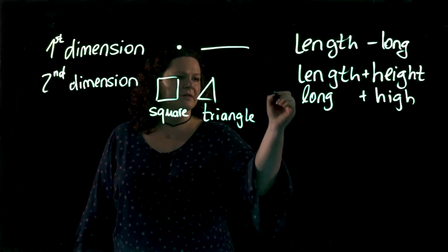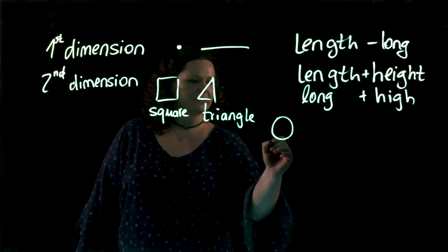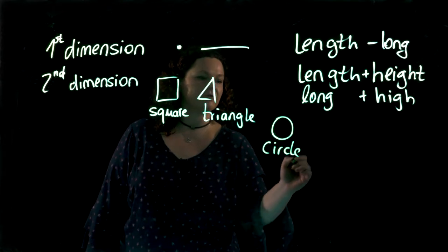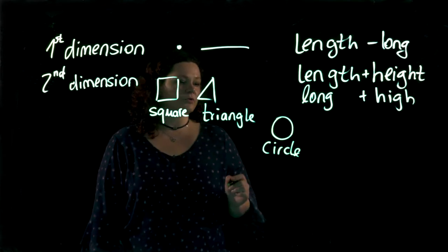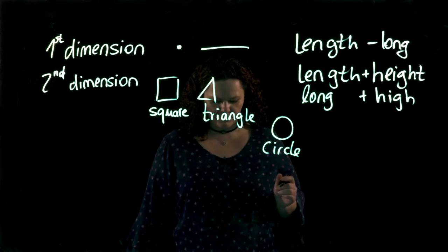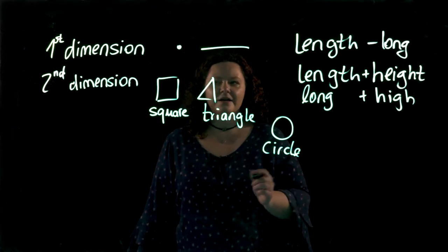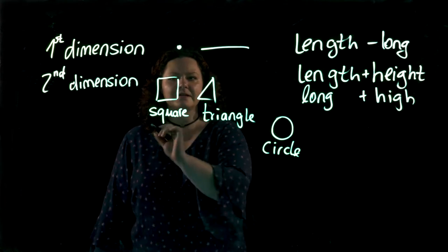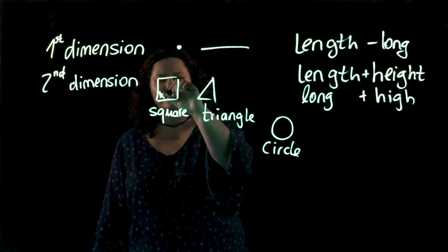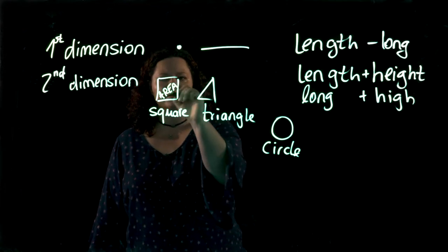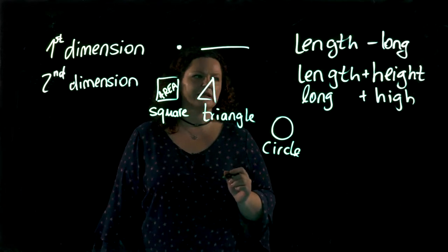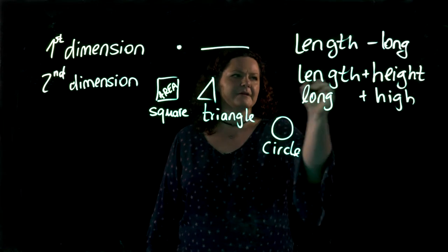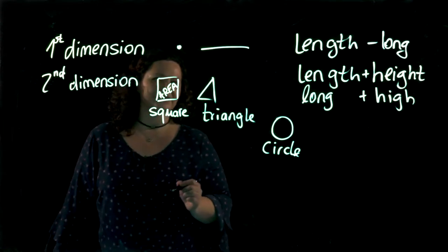Another one that we might also have here is the circle. Not perfectly round in this drawing but I think you know what I mean. So for all of these shapes in the second dimension we can say that they have area and the area is everything that is in here and we can calculate it with the length and the height.